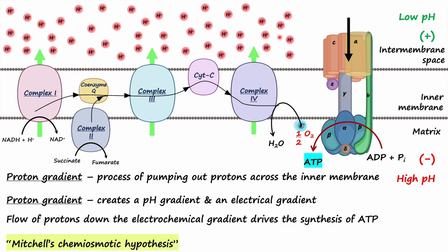How the proton gradient synthesizes ATP through the ATP synthase enzyme is the topic of my next video, which I will not cover in this lesson. Thank you so much for watching, I hope you learned something from this video on the electron transport chain. I will see you soon with my next video on electron transport chain and oxidative phosphorylation, where we will learn how ATP is synthesized through ATP synthase or the Complex 5 enzyme. Please do not forget to like, share, and subscribe to the channel.